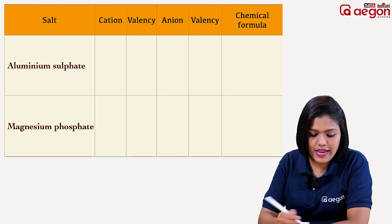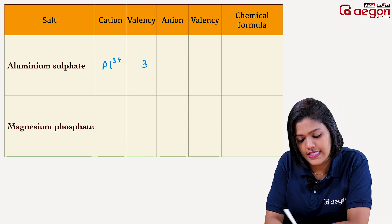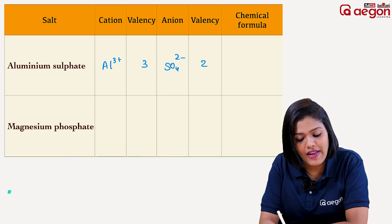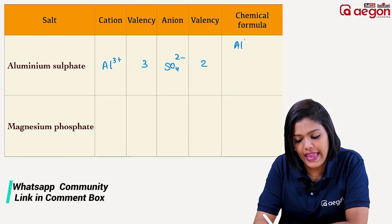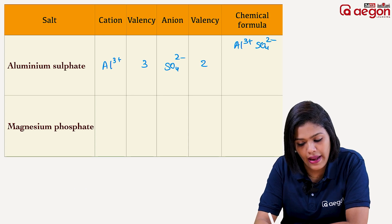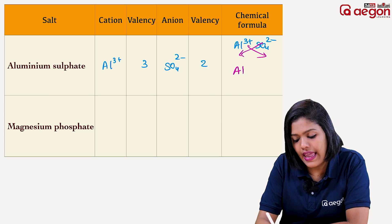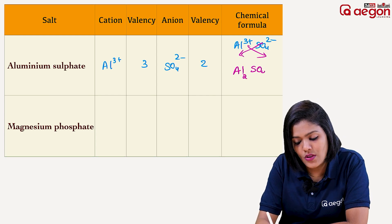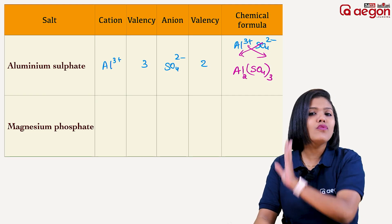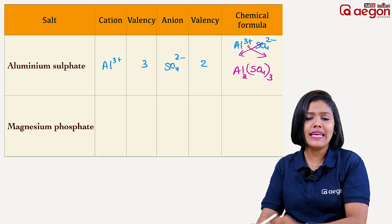Next example: Aluminium Sulfate. Aluminium is Al3+, valency 3. Sulfate is SO4 2-. We cross multiply: Al gets subscript 2, SO4 gets subscript 3. So the formula is Al2(SO4)3.